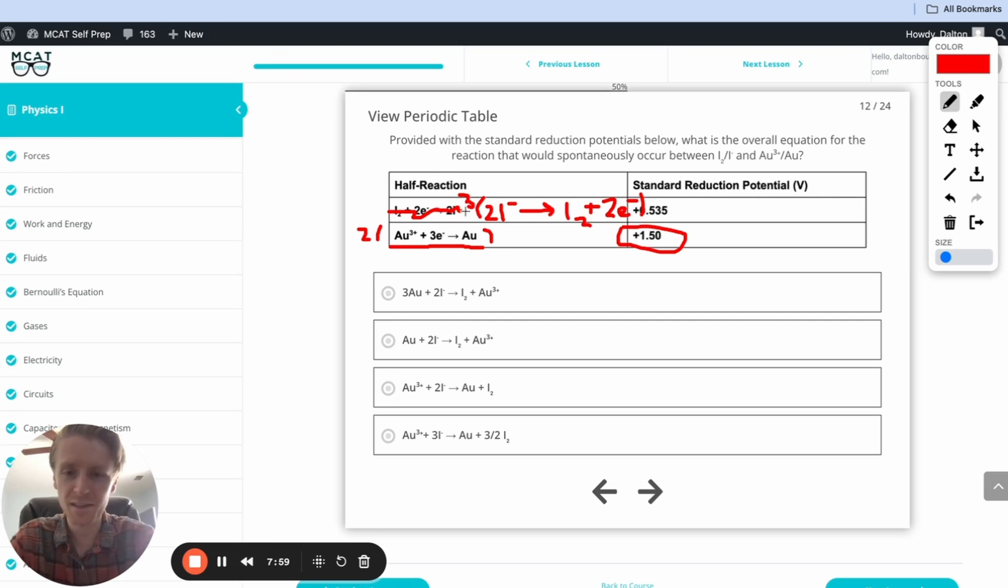So if I multiply these and then I add these equations together, we can see here three times two. I'm going to end up on my final equation with six I⁻. Perfect. I'm going to have that on that side. I'm also going to have two gold ions right here.